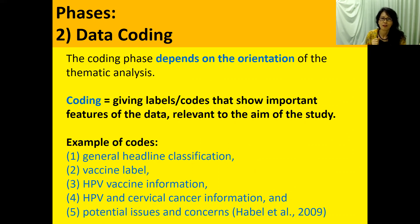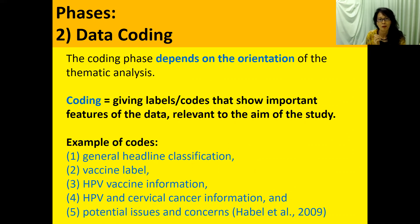An example of a set of codes from content analysis of newspaper articles on HPV vaccine are as follows: general headline classification, vaccine label, HPV vaccine information, HPV and cervical cancer information, and potential issues and concerns. This comes from Hebel et al. 2009. These are examples of codes, and we use them to analyze the data.